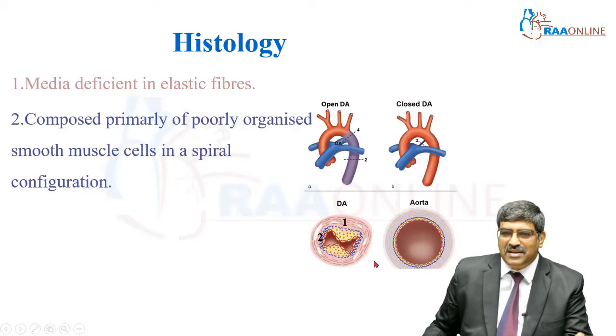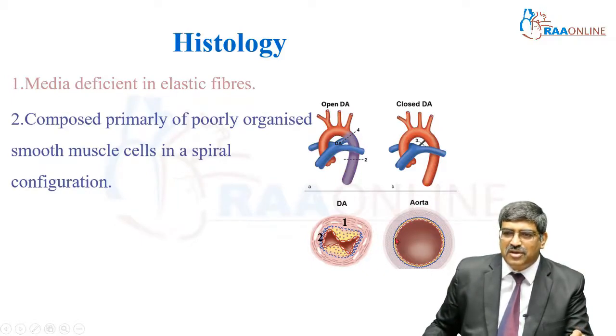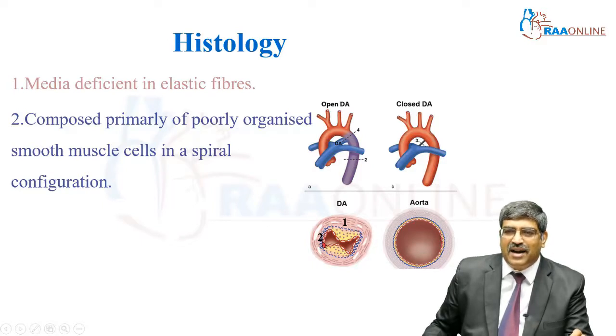Next is the smooth muscles. Here the smooth muscles are arranged in an organized fashion, but in the PDA it is poorly organized and arranged in a spiral configuration.